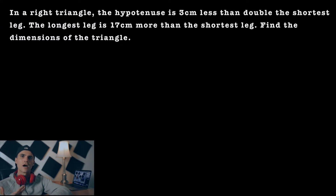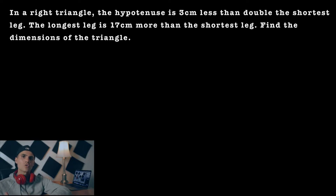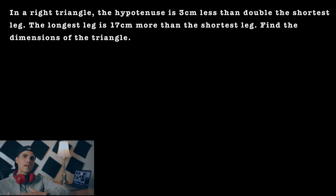So we're told that in a right triangle, the hypotenuse is three centimeters less than double the shortest leg, and the longest leg is 17 centimeters more than the shortest leg. What we've got to do is find the dimensions of the right triangle.